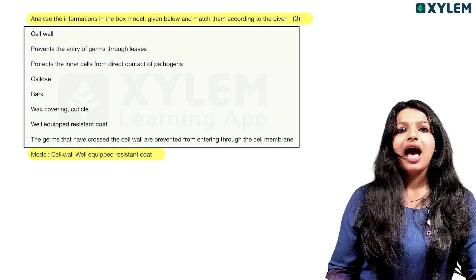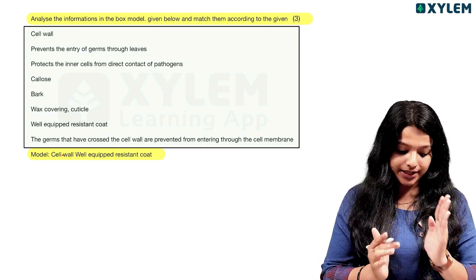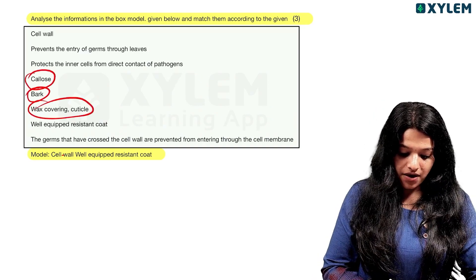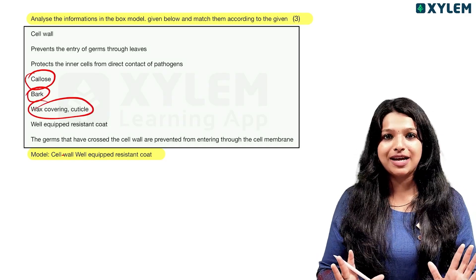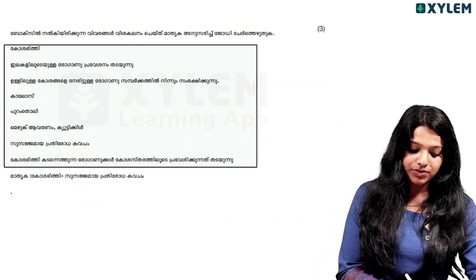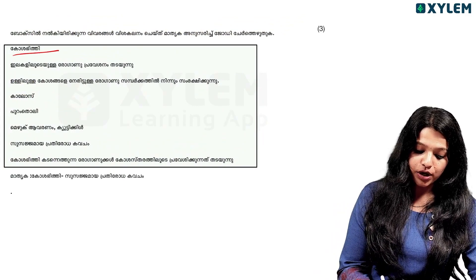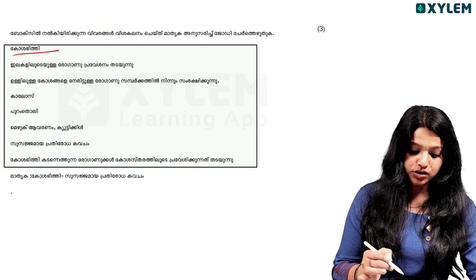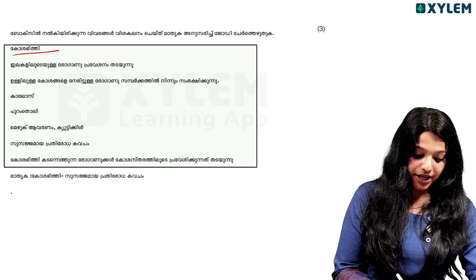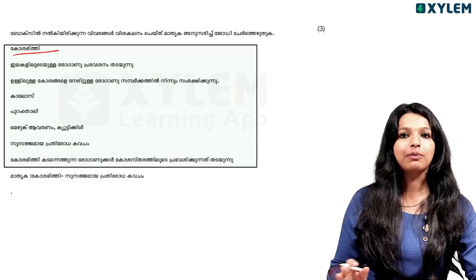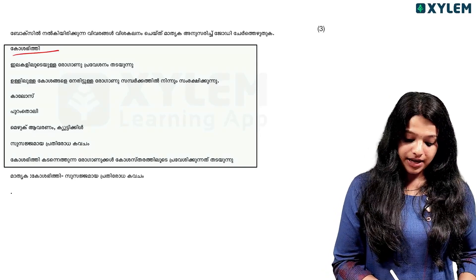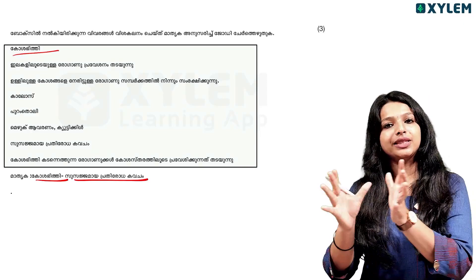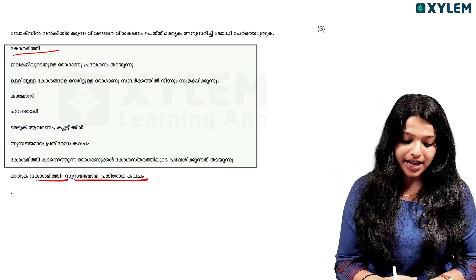It is a function of callose, bark, and wax covering cuticles. In terms of the different ones — callose and the cuticles — it is a function related to the conditions of the cell. We have to identify the name for each one.